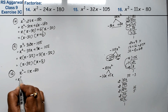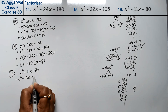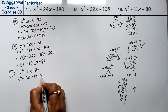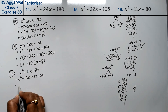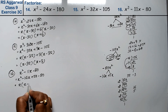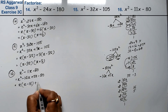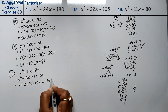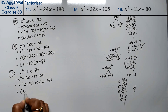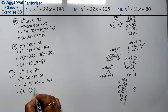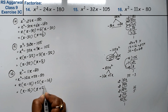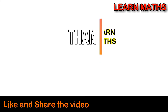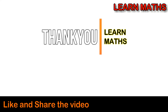So this gives x squared minus 16x plus 5x minus 80. x is common giving x minus 16, plus 5 is common giving x minus 16. So the answer is x minus 16 times x plus 5. If you understand the step-by-step solution in this video, please subscribe to my channel on maths and share it with your friends.